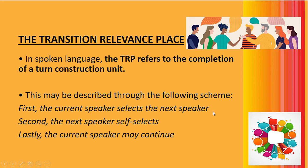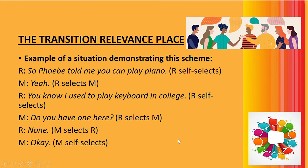In the first step, the current speaker self-selects the next speaker, deciding who will be the receiver of the message. In the second step, the next speaker self-selects — the targeted speaker may respond to the message, answer it, or simply disregard it by not giving any feedback. The response of the second speaker may depend on his or her own self-selection. In the third step, the current speaker may continue, which signifies the continuity of the conversation.